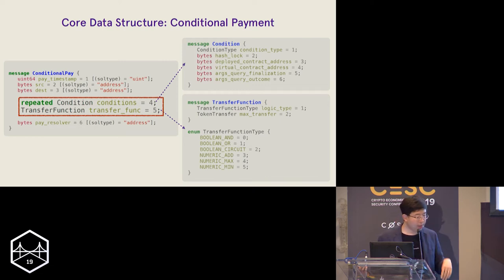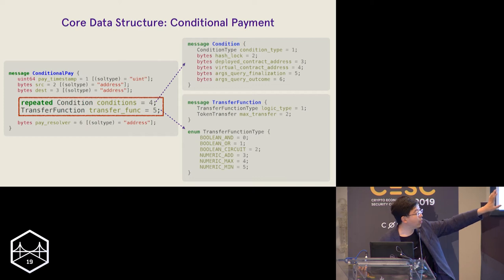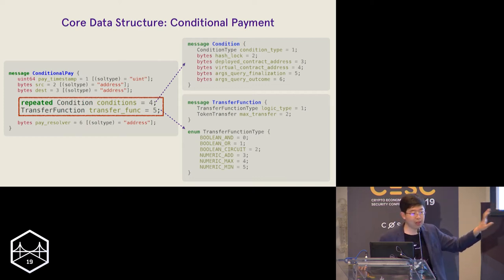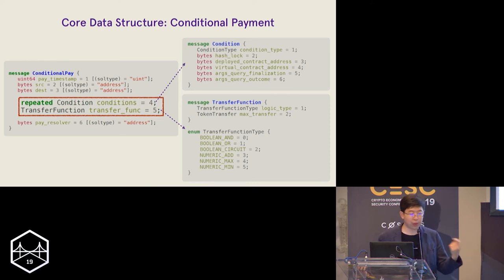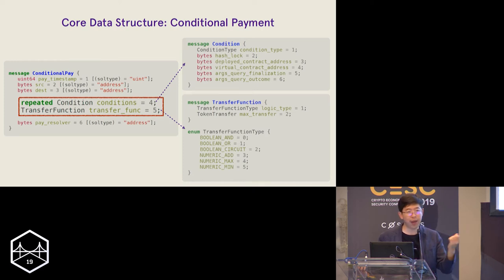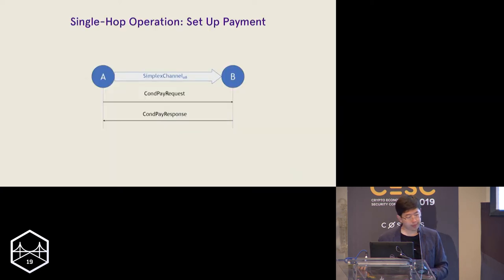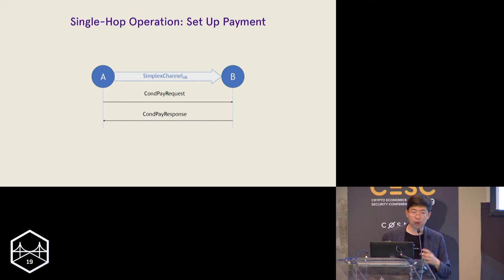More concretely, we build a number of pre-built conditional transfer functions including boolean AND, OR, circuits, numerical add, and maximum. For example, you can send a boolean conditional payment that says: I will only pay you this amount if that condition becomes true.